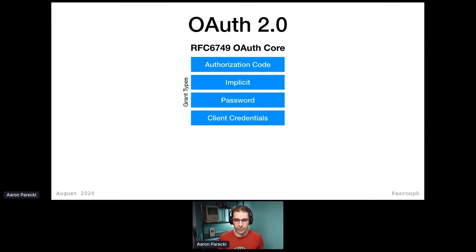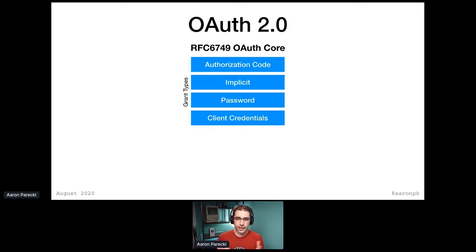We've got the authorization code, which is probably the most common grant type. It also defines the implicit flow, which historically was used in mobile apps as well as single-page apps. It also defines a password grant type when you don't want to do a redirect flow, and it defines client credentials when there is no user.